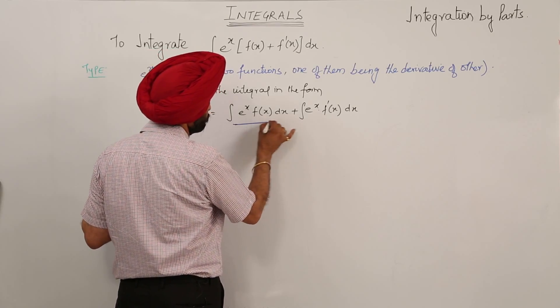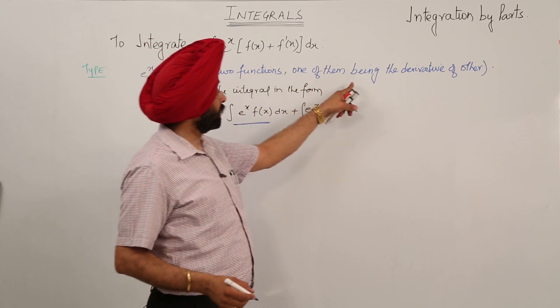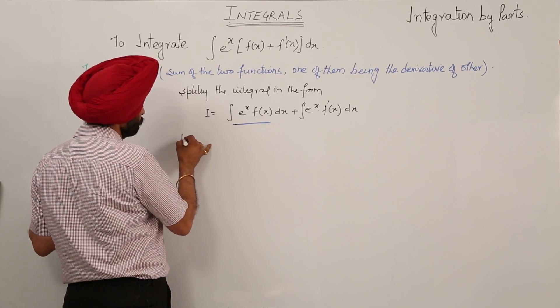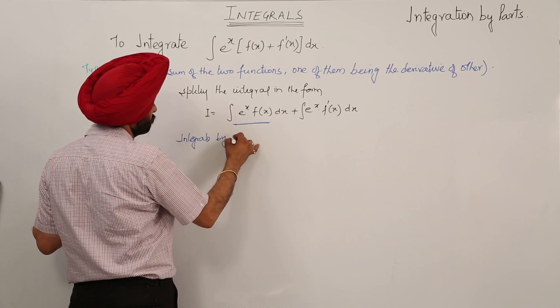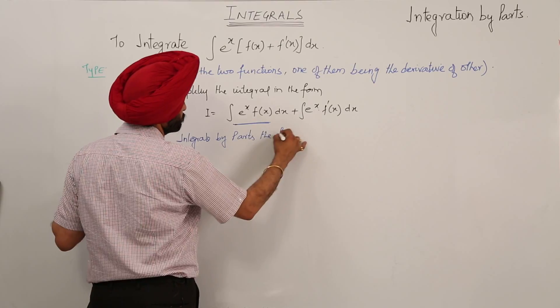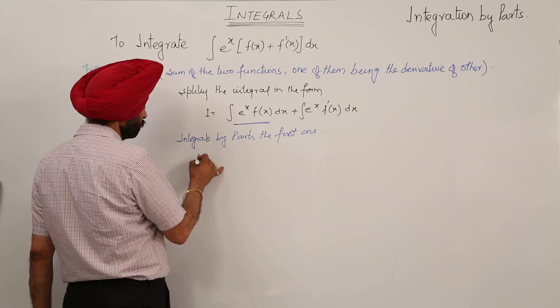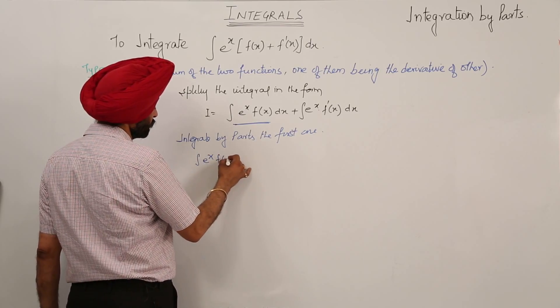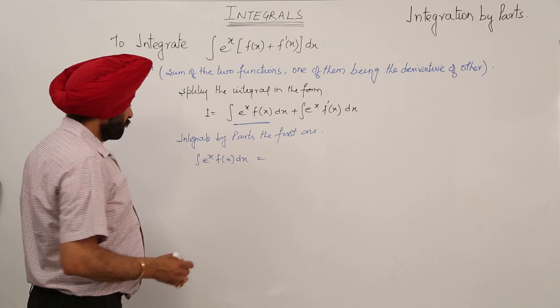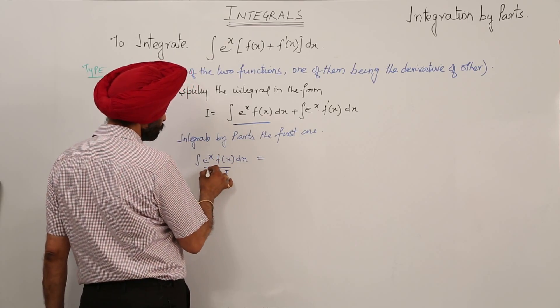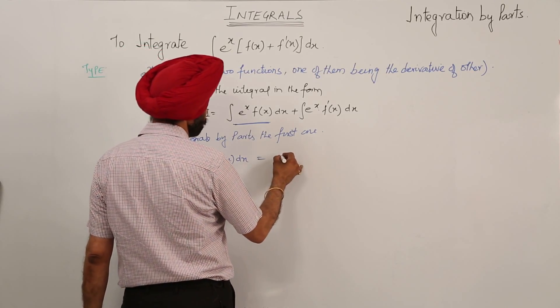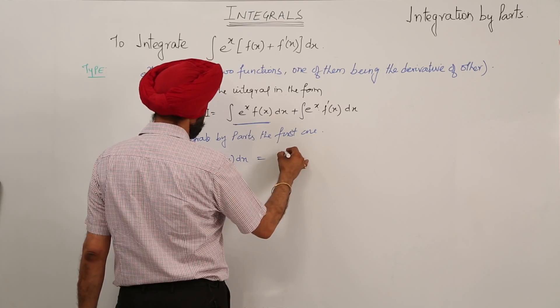Remember that we have the sum of two functions, one being the derivative of the other. Now integrate by parts the first part. Integration of eˣ f(x) dx equals f(x) times integration of eˣ dx, minus the integration of [d/dx of f(x) times integration of eˣ dx] dx. The result is f(x)eˣ minus integration of f'(x) eˣ dx.